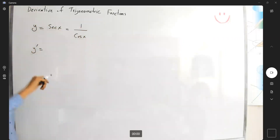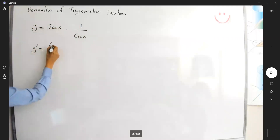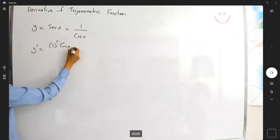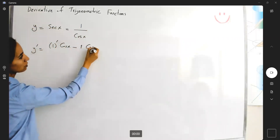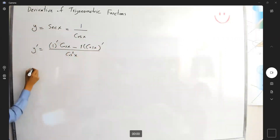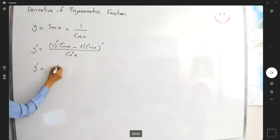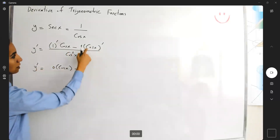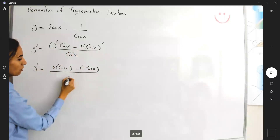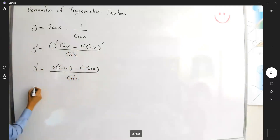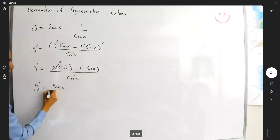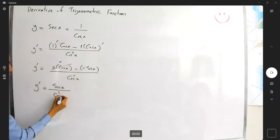Let's use the quotient rule. The derivative of 1 is 0 times cosine of x, minus 1 times the derivative of cosine, divided by cosine squared of x. So y' is equal to 0 times cosine x, minus the derivative of cosine, which is negative sine, divided by cosine squared of x. So y' becomes 0 minus negative, which is plus sine x divided by cosine squared of x.